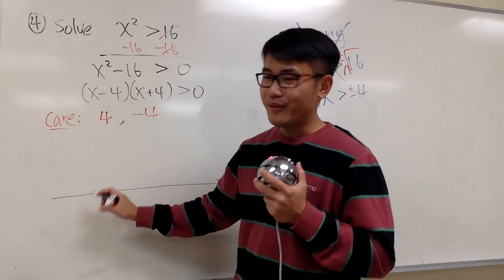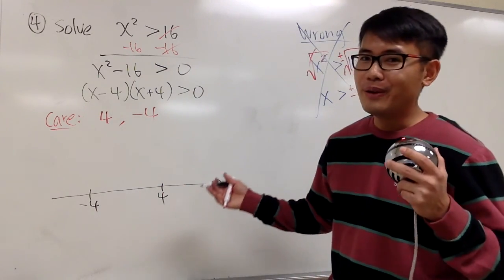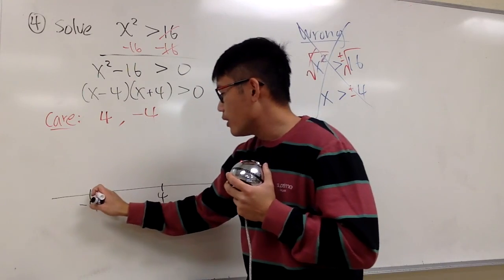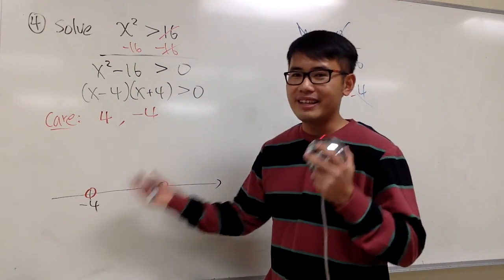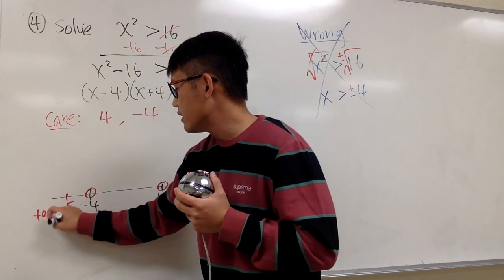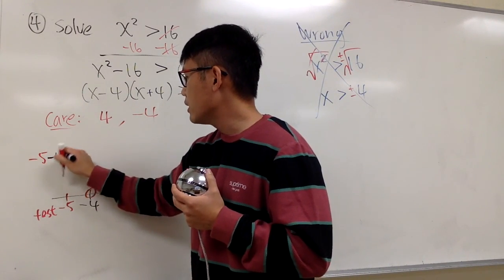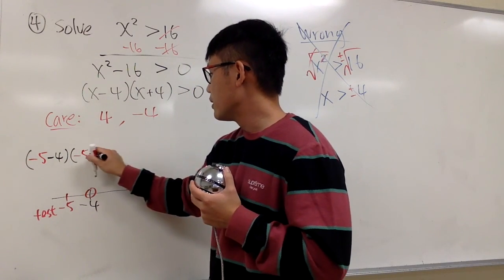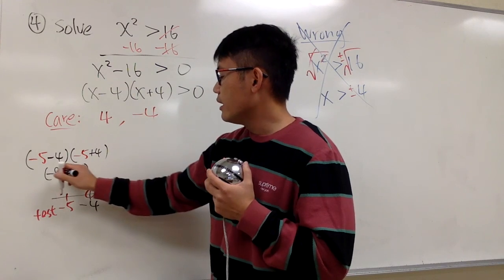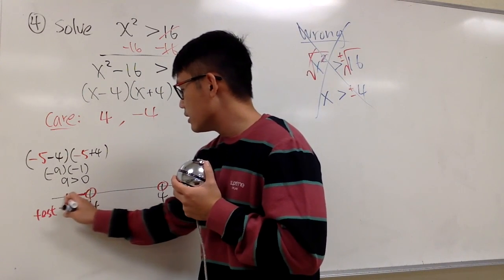Number line: let me put down negative 4 first and positive 4 here. Do we want to include these numbers? No, because originally there is no equal sign — so open circles on both. Let's test the intervals. Pick a number less than negative 4 — let me use negative 5. Plugging in negative 5: (negative 5 minus 4) times (negative 5 plus 4) = negative 9 times negative 1 = positive 9. Is this greater than 0? Yes — so this interval is part of the answer.